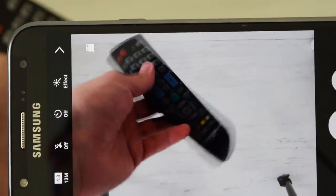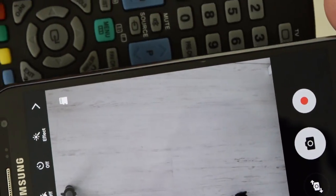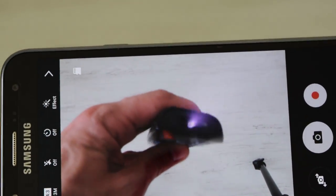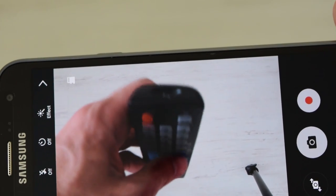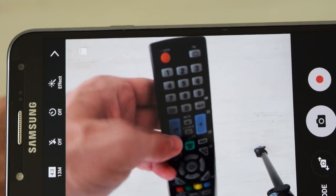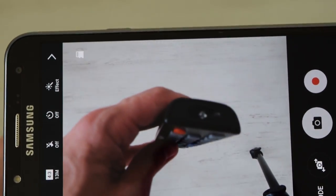You can test your remote control with your cell phone camera. Your remote emits infrared light that your eyes cannot see, but most digital cameras can. If the button isn't working, you wouldn't see any light emitted from the remote control.